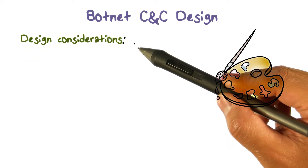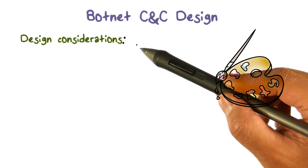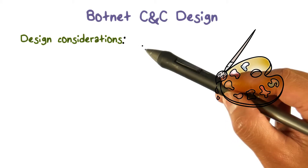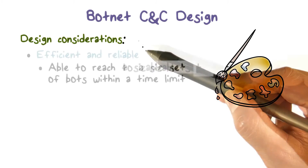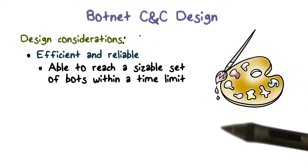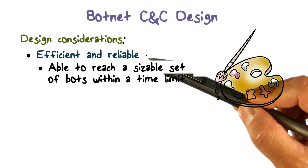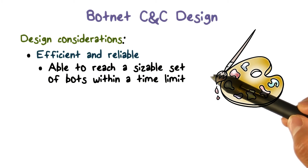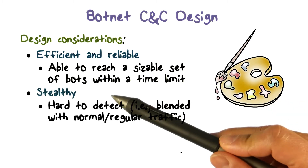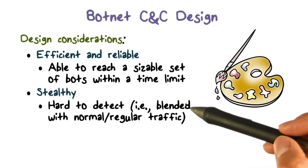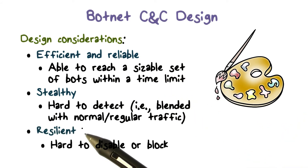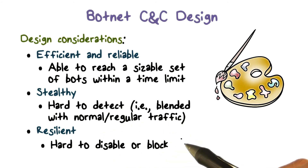In addition to safety, utility is also very important to the bot master. In other words, a bot master wants efficient and reliable communications so that he can reach and coordinate enough bots to perform a specific task. To summarize the design considerations of botnet C&C: the bot master would want efficient and reliable communication — that is, the ability to reach a sizable set of bots within a certain time limit — stealthy communication so that it is hard to detect C&C traffic, and resilient or robust communication so that it is very hard to disable or block C&C traffic.